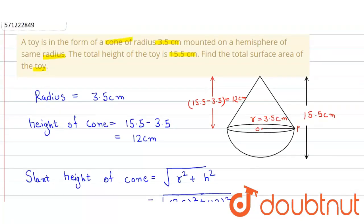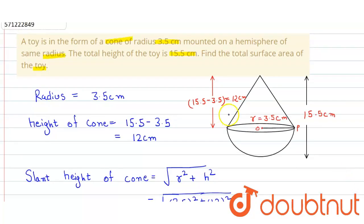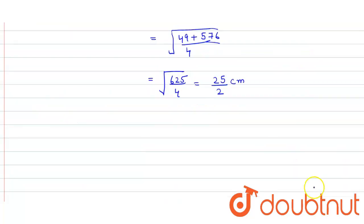Now we find out the total surface area. The total surface area will be curved surface area of this cone plus the curved surface area of this hemisphere. So the required surface area will be curved surface area of cone plus curved surface area of hemisphere.